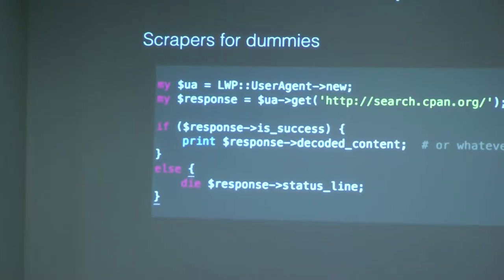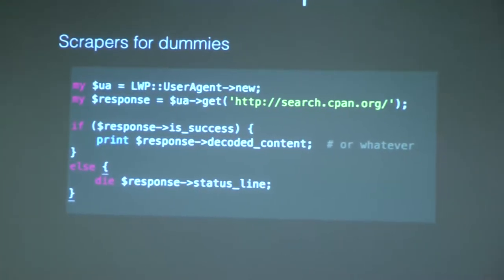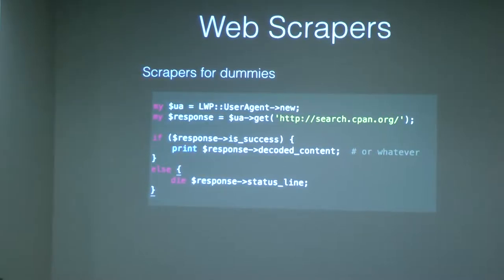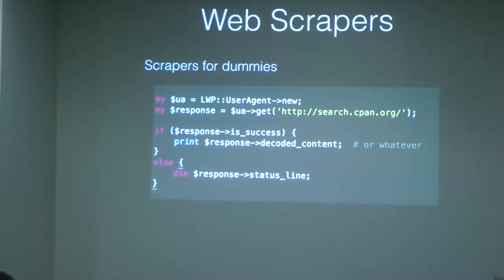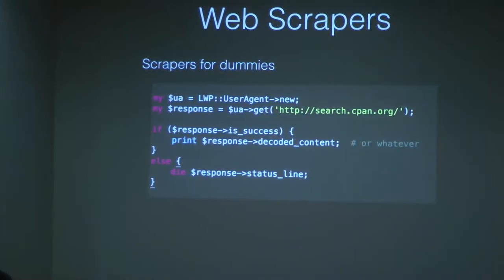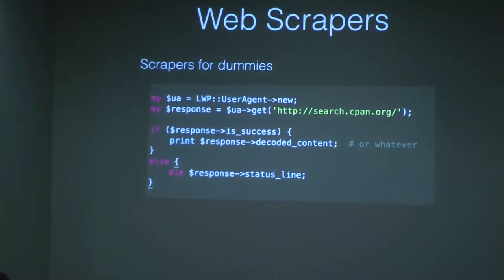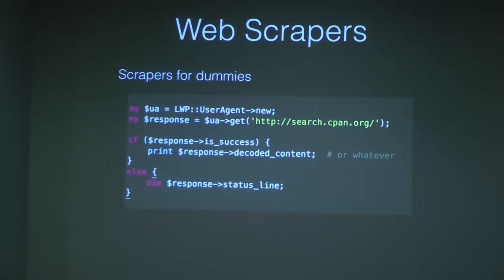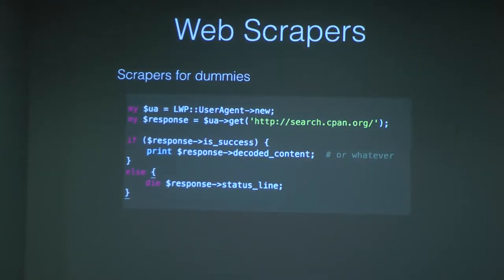Some websites don't have an API, so you need to extract the content using a user agent and parse and query it. That's one place where Perl excels when you need to extract content. The simplest web scraper would be: initialize your user agent, do a GET query to a web page, check if it succeeds, and return the content. You've done your very first web scraper.